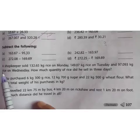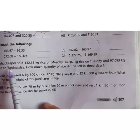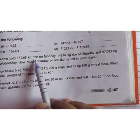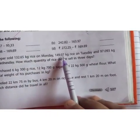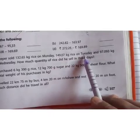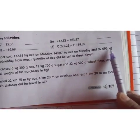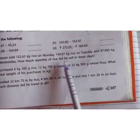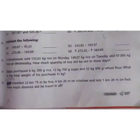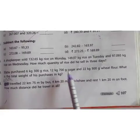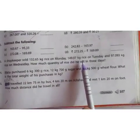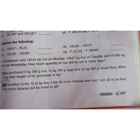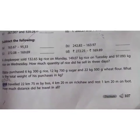Next, we will go to verbal problems based on addition and subtraction. A shopkeeper sold 132.65 kg of rice on Monday, 149.07 kg of rice on Tuesday, and 97.093 kg of rice on Wednesday. How much quantity of rice did he sell in 3 days? So children, what you have to do? You have to add all the purchases, that is whatever he sold in the 3 days. So write the statement.